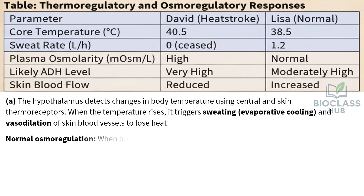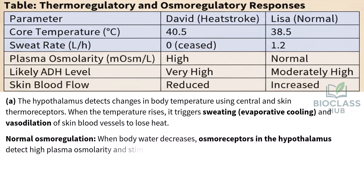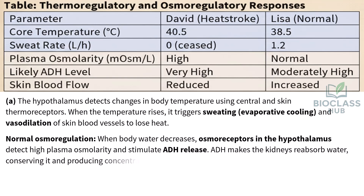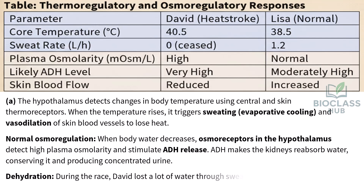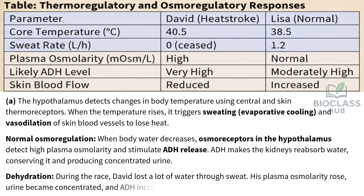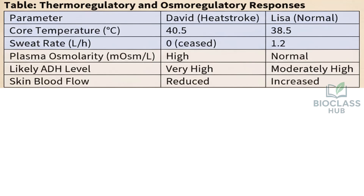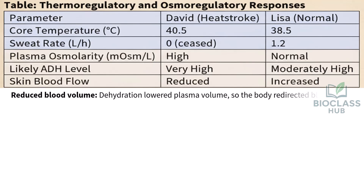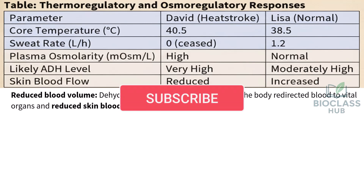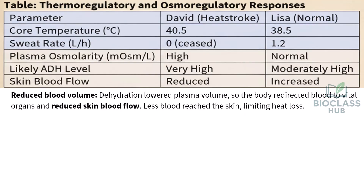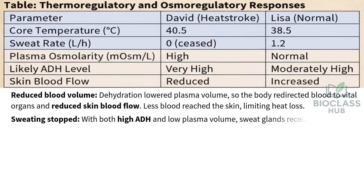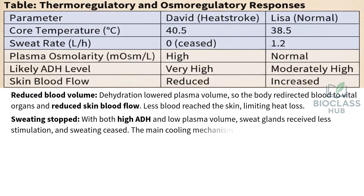Normal osmoregulation: when body water decreases, osmoreceptors in the hypothalamus detect high plasma osmolarity and stimulate ADH release. ADH makes the kidneys reabsorb water, conserving it and producing concentrated urine. During the race, David lost a lot of water through sweat. His plasma osmolarity rose, urine became concentrated, and ADH increased to conserve water. Dehydration lowered plasma volume, so the body redirected blood to vital organs and reduced skin blood flow. Less blood reached the skin, limiting heat loss.